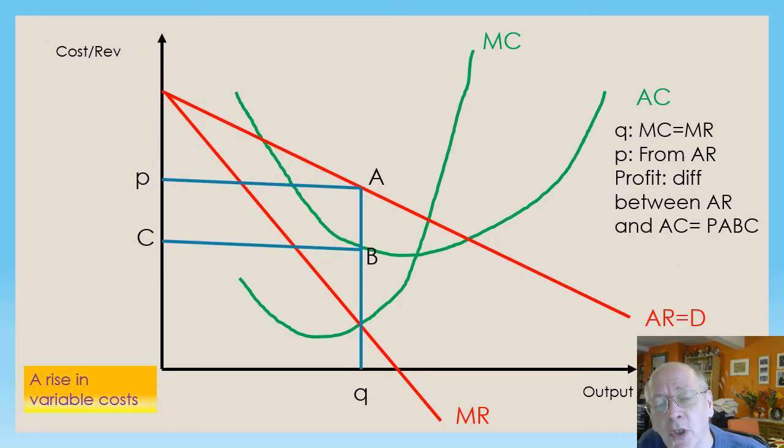So what about the situation when there's a rise in variable costs? For example, we could have tariffs imposed upon us, which would increase the cost of our imported raw materials when we're manufacturing a car.